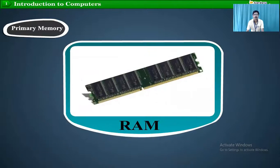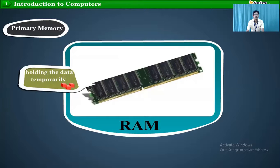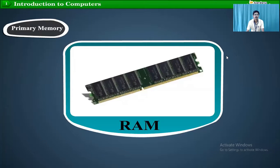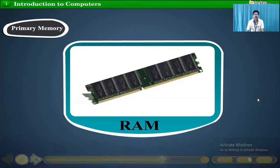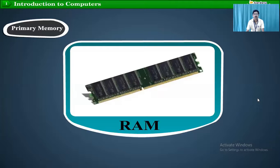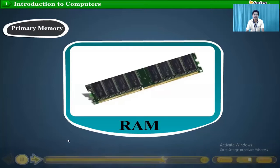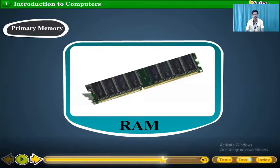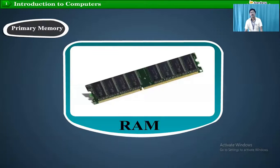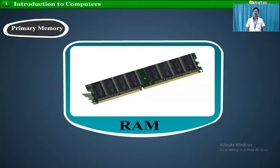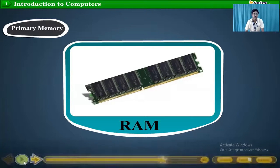RAM stands for random access memory. It is used for holding the data temporarily while the computer is working. Its data gets erased when the computer is switched off. The data is temporarily available in RAM, but when the power goes off, the data vanishes — it is not stored permanently in RAM, it is destroyed.